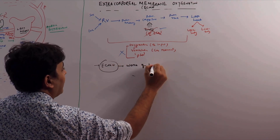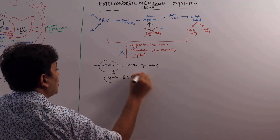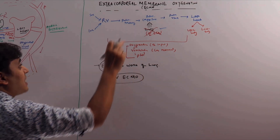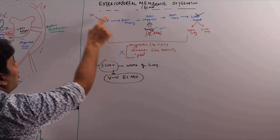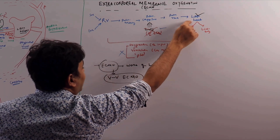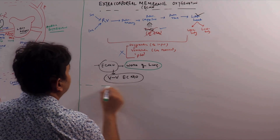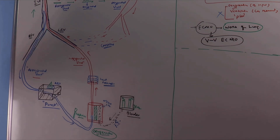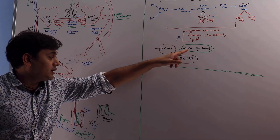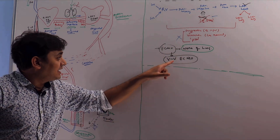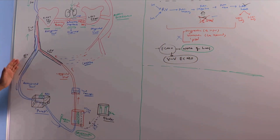This is called veno-venous ECMO, which does the work of the lung specifically. It means we take the blood from a vein and put it back into a vein, because the heart is working fine. The blood will then go via pulmonary artery, capillaries, and pulmonary vein to the left heart, which can contract very well. So this is called veno-venous ECMO. Now let us see the components. We take blood from one vein and put it into another vein; you do not need to use an artery.